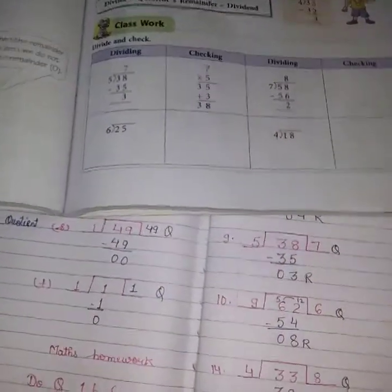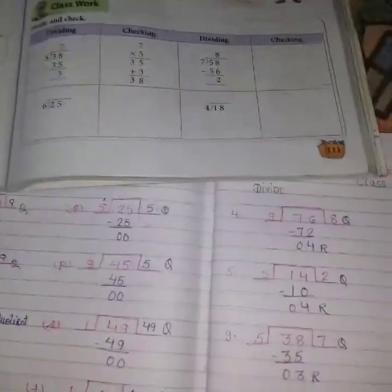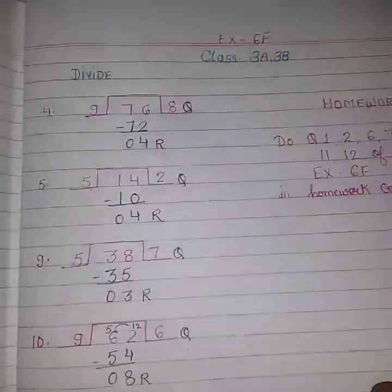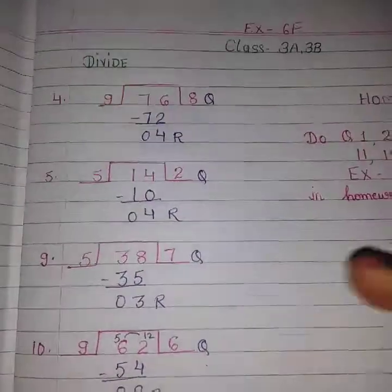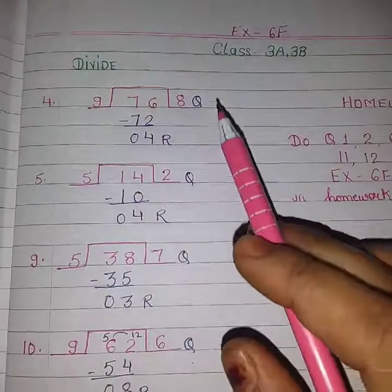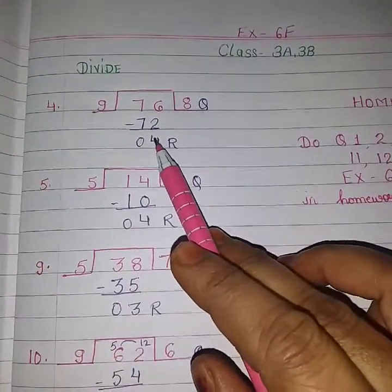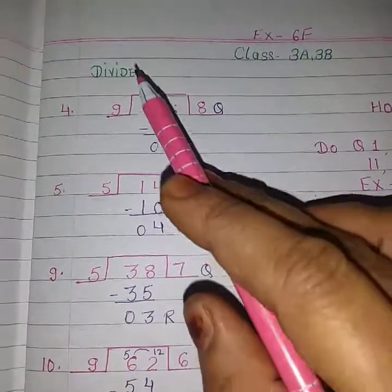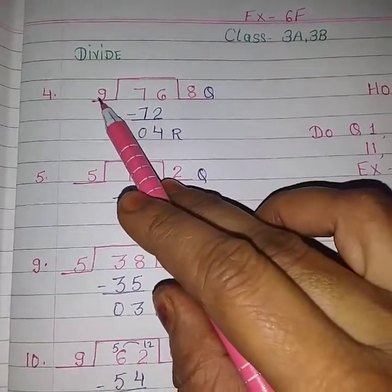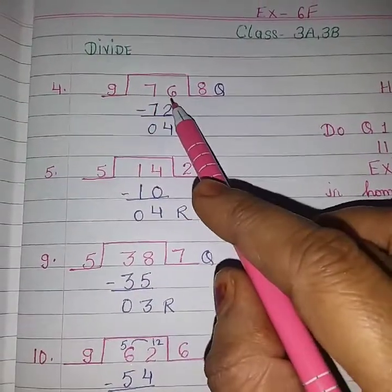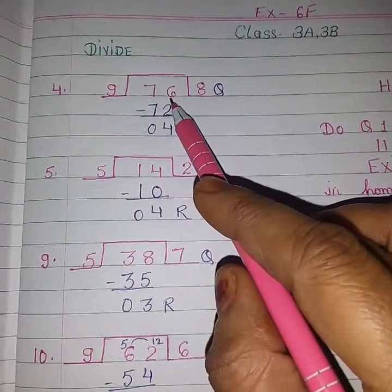Here are some of the questions I have solved. These questions you have to do in your classwork copy. This is question number 4. Here the divisor is 9 and 76 is the dividend.